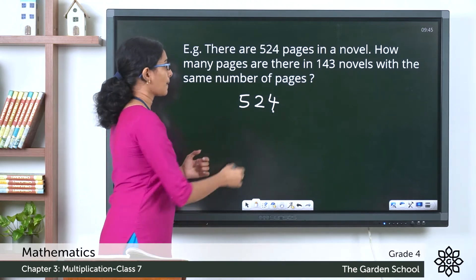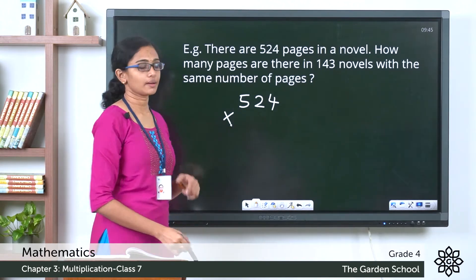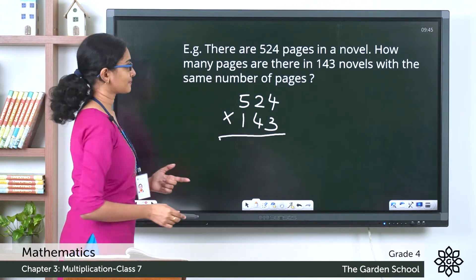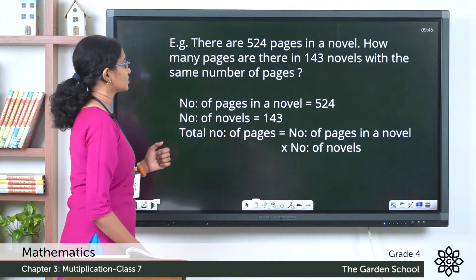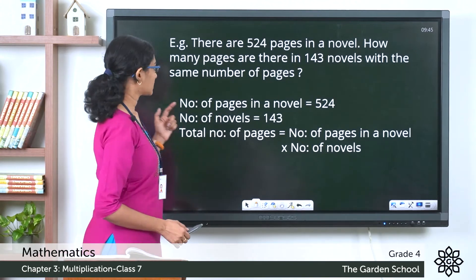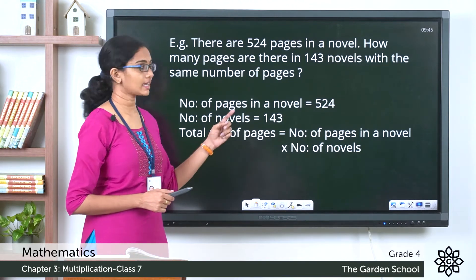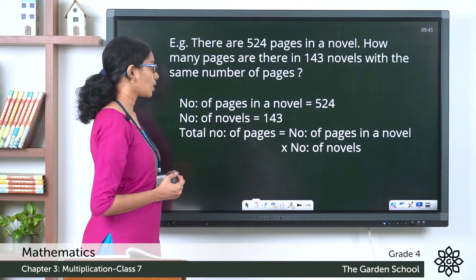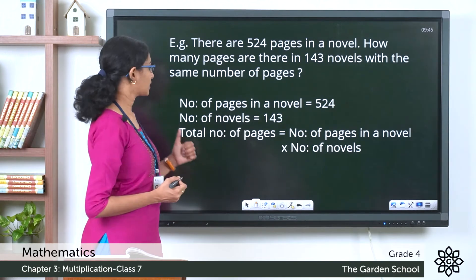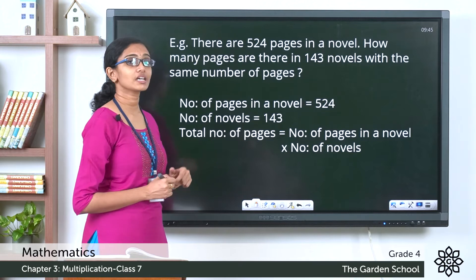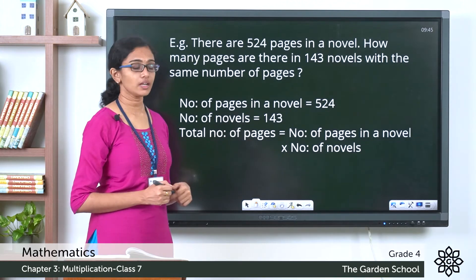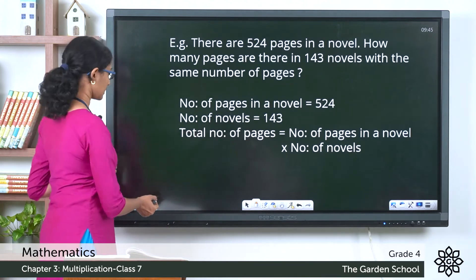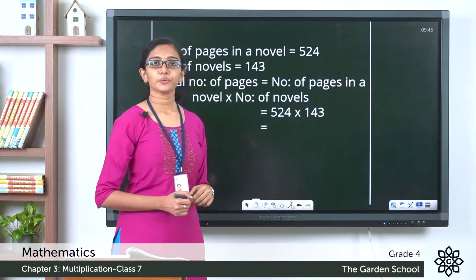To find the answer, you multiply the number of pages in one novel by the total number of novels. Let's write the steps from the data given in the question: the number of pages in a novel is 524, the number of novels is 143, and the total number of pages equals the number of pages in a novel multiplied by the number of novels.